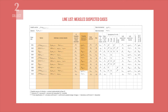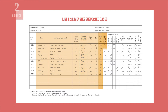Enter possible sources of infection such as any contact with another infected person. If possible, include the case ID number. Add the date of the onset of symptoms and the date that the patient first presented at the health facility.